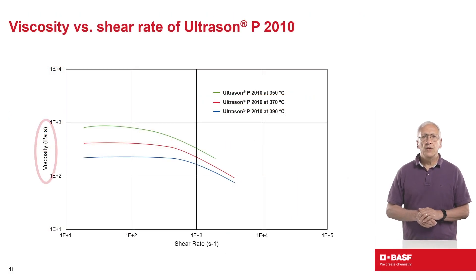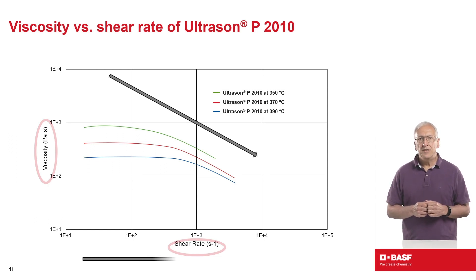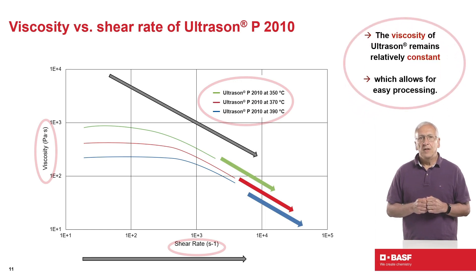Here's a slide of viscosity versus shear rate for one of our Ultrason molding grades. This information is important for material processors because it provides an indication of how a material will perform in a given operation, like injection molding or extrusion. Ultrason exhibits non-Newtonian behavior — viscosity decreases as shear rate increases at a given temperature, and higher temperature brings viscosity down as well. Increased shear rate and increased temperature generally make the materials easier to process. Ultrason viscosity doesn't change significantly between 350 to 390 degrees C, allowing for a relatively wide processing window for customers.